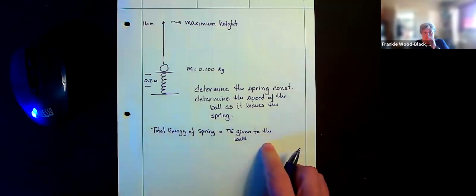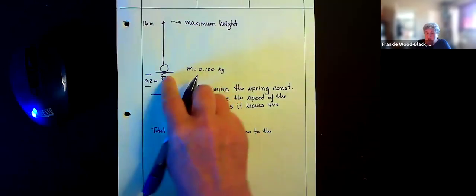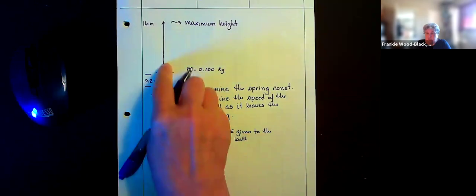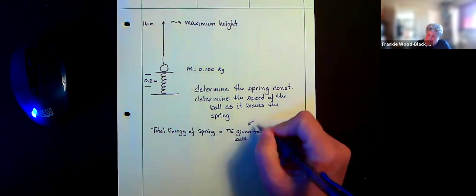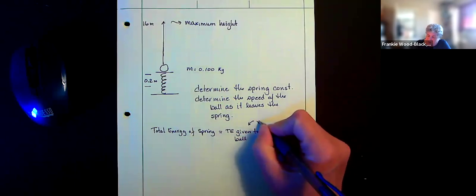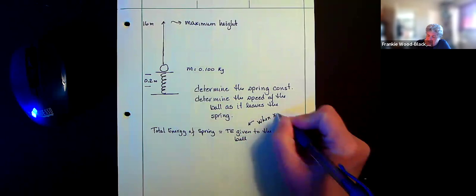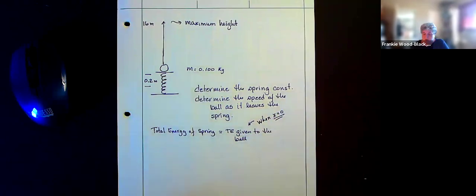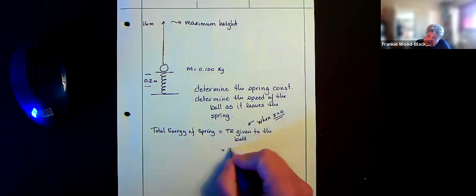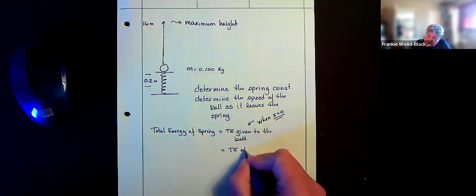And that's going to be the case when the ball leaves our spring. So this is going to be the total energy given to the ball is when x is going to equal zero or there's no stretch in the spring, and that's going to equal the total energy at the top.